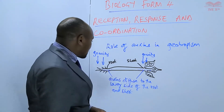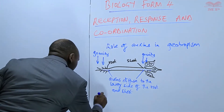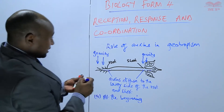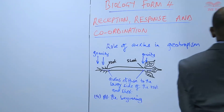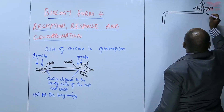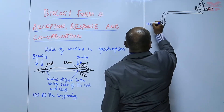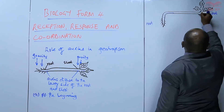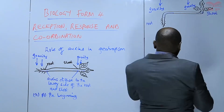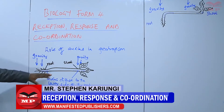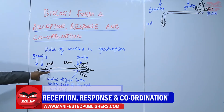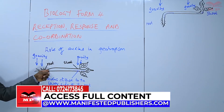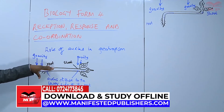If we observe this seedling after a few days, when the concentration of auxins is higher on the lower side, it makes the lower side of the root grow more slowly than the upper side. So the upper side of the root grows faster. In this case the auxins prevent faster growth of the root on the lower side, and the root bends downwards.